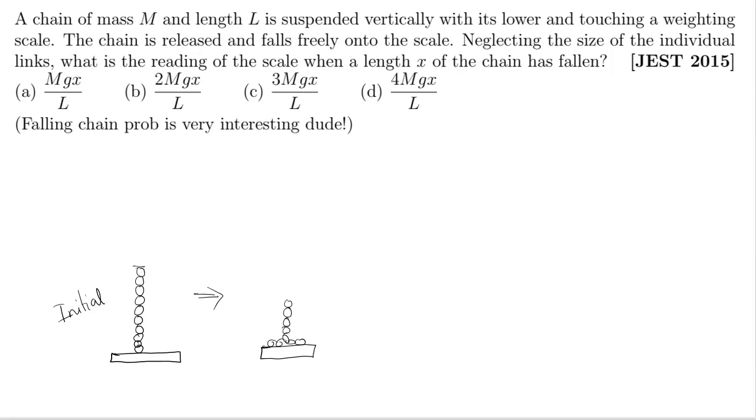Say right now the chain is like this and some amount of the chain has already fallen. The x amount of chain has fallen. So this much length which has already fallen to the weighing scale, this is your x.